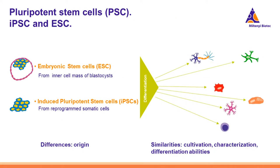There are mainly two types of PSCs distinguished by their origin. Embryonic stem cells are originally derived from the inner cell mass of a developing embryo. Whereas induced pluripotent stem cells, iPSCs, are derived from already differentiated somatic cells by cellular reprogramming. Other than this difference in origin, embryonic stem cells and iPSCs are extremely similar in terms of cultivation, morphology, marker expression, and experimental handling.